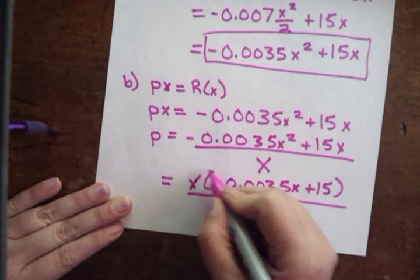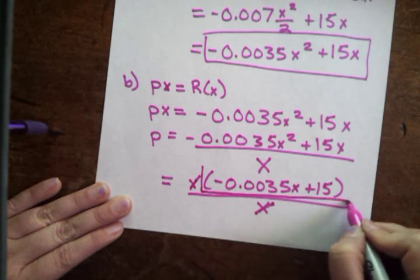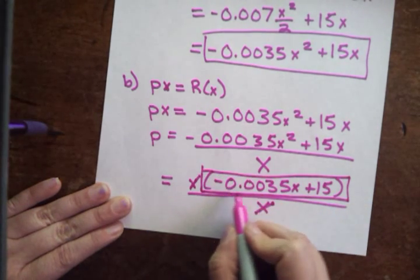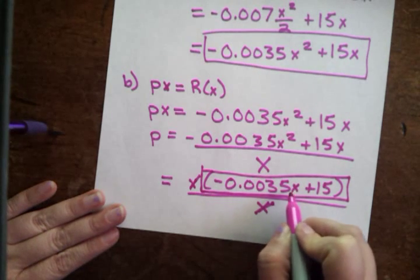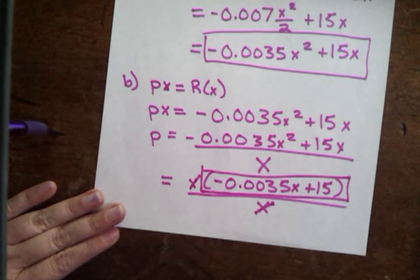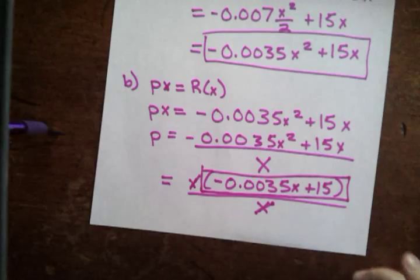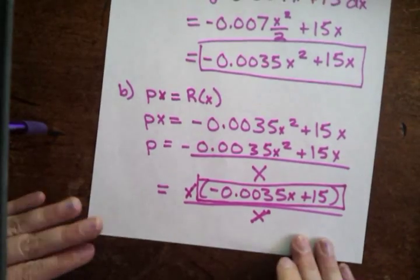And your answer for p is just going to be negative 0.0035x plus 15. I'm sorry, I can't read my own handwriting.